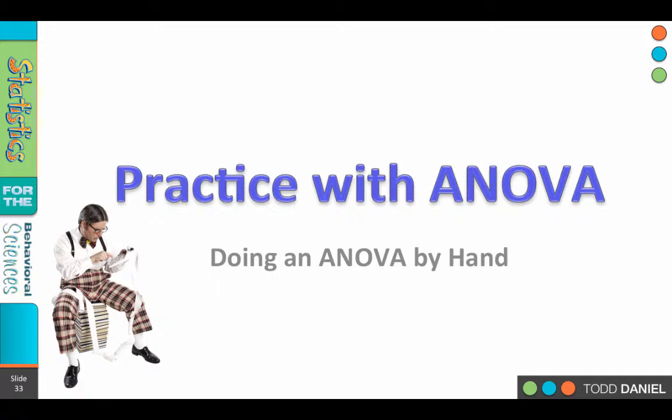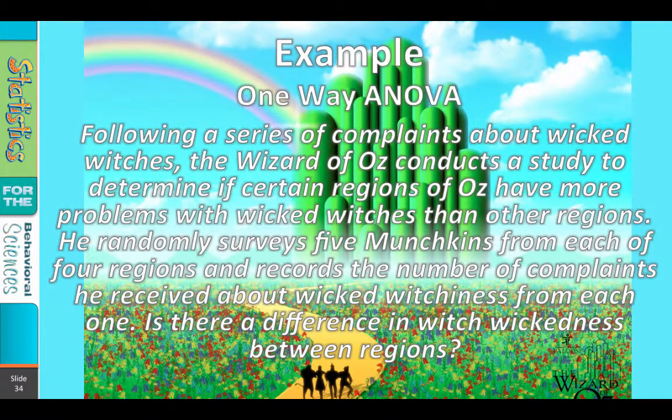So here is the analysis that we are going to conduct for our one-way ANOVA. Following a series of complaints about wicked witches, the Wizard of Oz conducts a study to determine if certain regions of Oz have more problems with wicked witches than other regions.